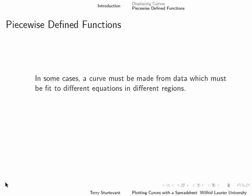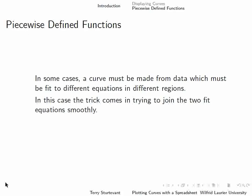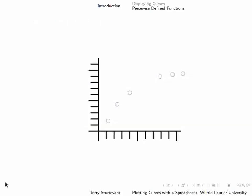Now in some cases, you have a function which is piecewise defined, which means you have to make a curve from data which must fit two different equations in different regions of the graph. So here's a case where you have two straight line sections. A straight line section here, and a straight line section here. What you have to come up with is the curve that's going to join them.